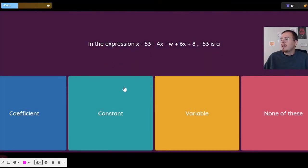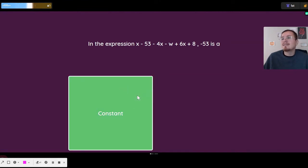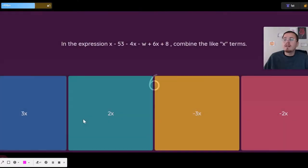In the expression, negative 53 is a - we just talked about this - is a constant. Constants are just numbers because the value doesn't change. You have to do something to change them where variables can be just about anything.